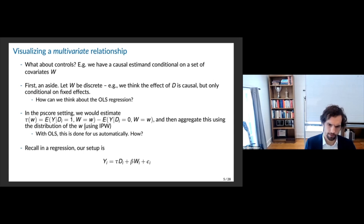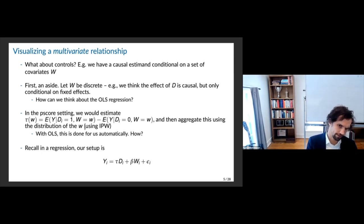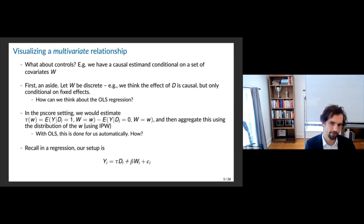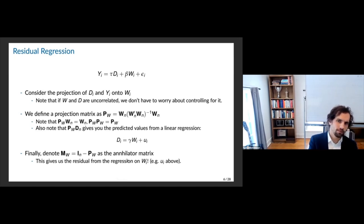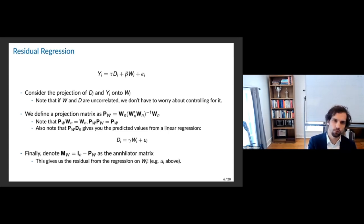With OLS we don't do any of that — it's like a one-button thing. The question is: given that it's done automatically, what estimate is it getting us? We talked a little about this with the Aaron Olin-Miller example before, but now we're going to talk about the exact relationship. When we do a regression like this, beta_W is our set of controls and we have tau.